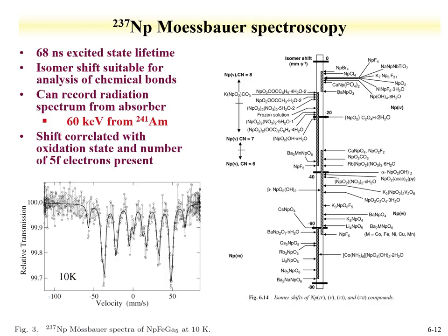Mössbauer spectra can also be collected for other elements. Here's an example for Neptunium showing all the chemical shifts — if you record the chemical shifts you can determine what oxidation state and chemical form of Neptunium corresponds to those shifts, giving information about coordination number, oxidation state, and chemical form. Here's actual data for a Neptunium-iron-gallium compound recorded at 10 K, where the relative transmission goes from 100% to 99.7%.